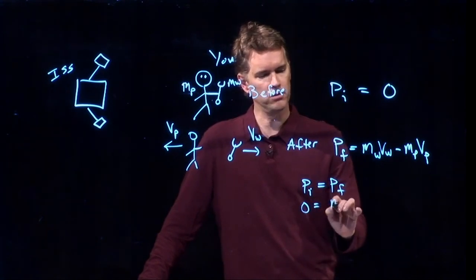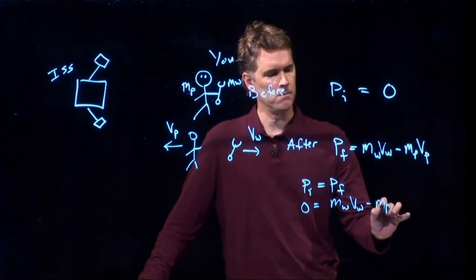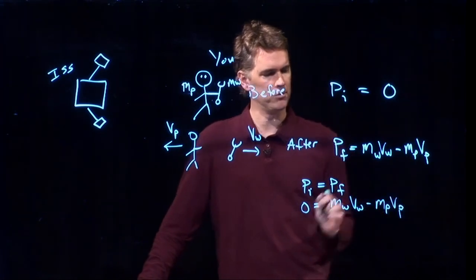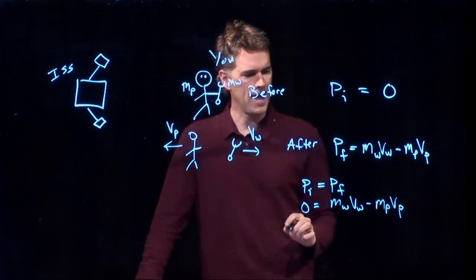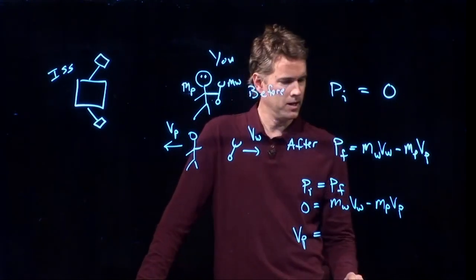Pi equals Pf. Zero equals mass of the wrench times velocity of the wrench, minus mass of the person times velocity of the person. And now we can solve for the velocity of the person.